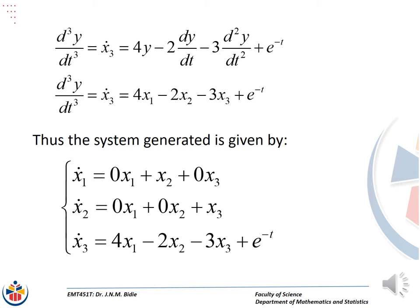The last derivative in our differential equation was the third derivative of y with respect to time, giving us x3_dot. We cannot let x3_dot be equal to x4 because the highest derivative is the third derivative. So we can only have three state variables: x1, x2, and x3, and therefore only x1_dot, x2_dot, and x3_dot. When we get to the highest derivative, we take all the other terms to the right hand side, remembering that we had the input function e to the power negative t on the right hand side.